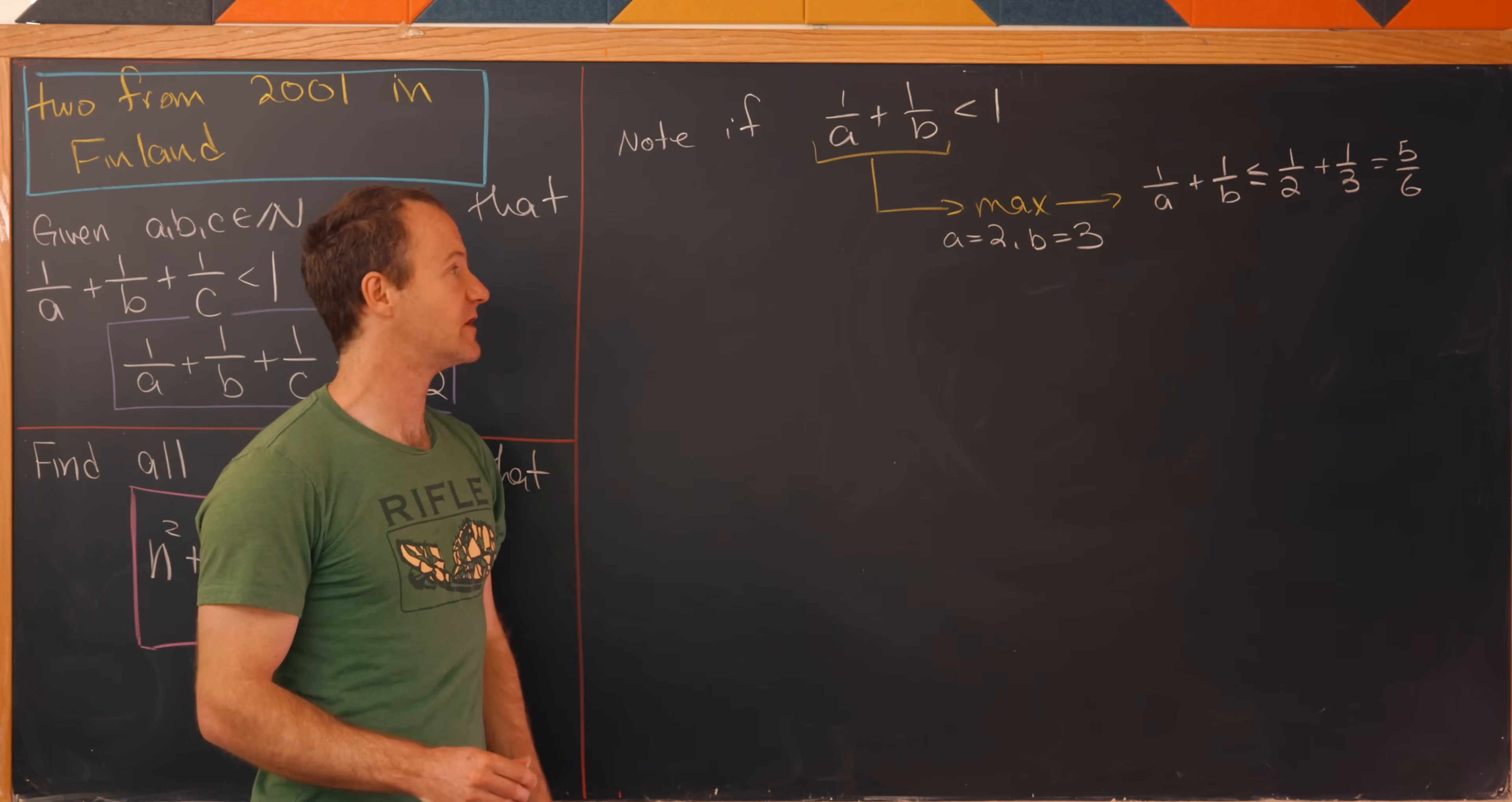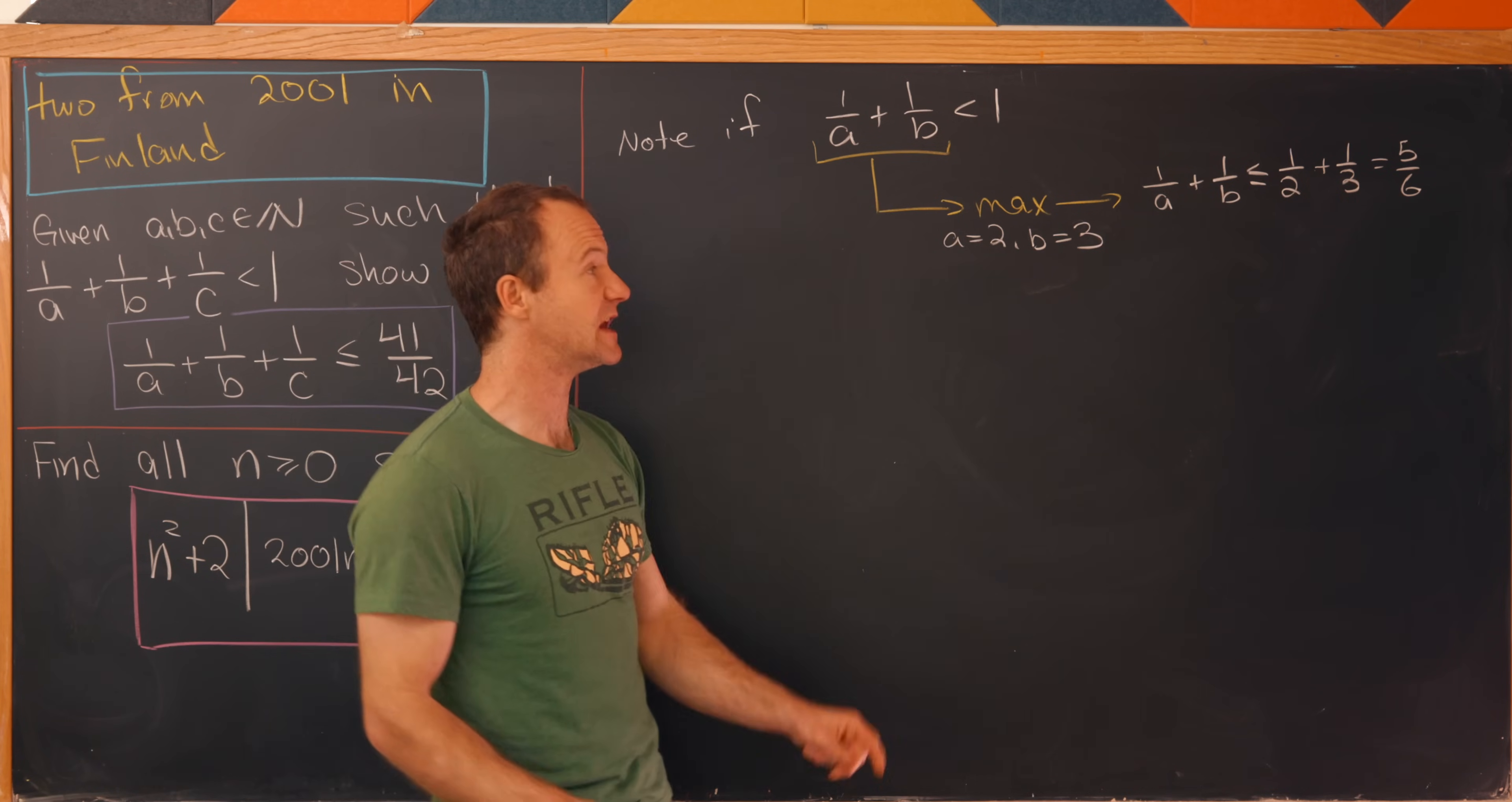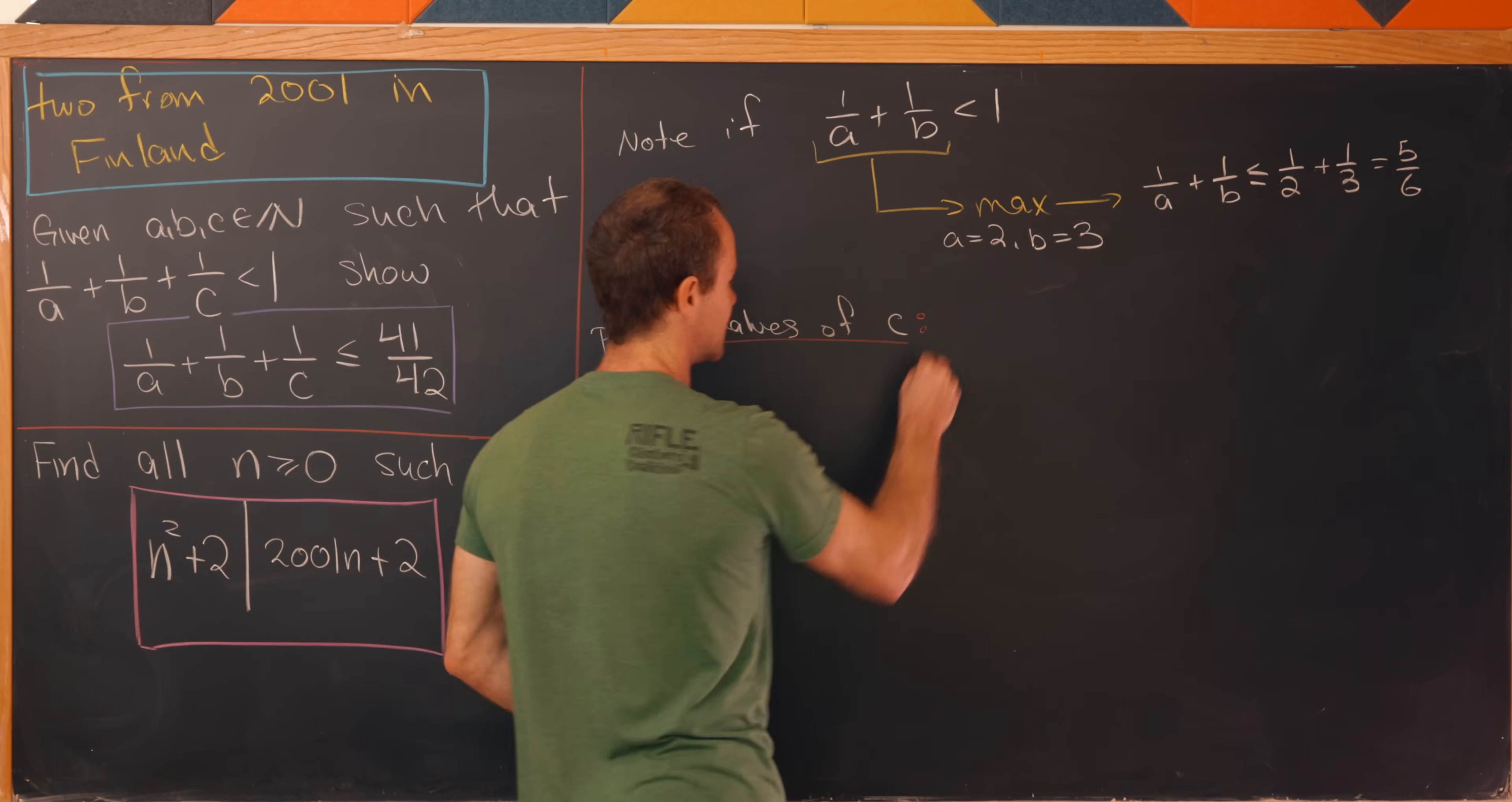That means both of them have to be bigger than or equal to 2. But now if A equals 2, then B is not allowed to be equal to 2, because then they would sum to 1. So that means that B has to be bigger than or equal to 3. And in fact, B equals 3 works in this case and gives us that setup.